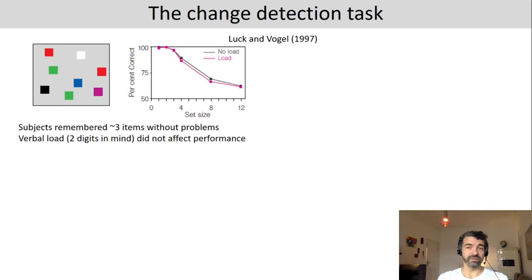As you probably noticed, the more items there are on the screen, the more difficult it is, because working memory has a limited capacity. You can only put that many items in a slot in working memory. If the item that happens to be probed did not fall into one of these slots, then you are at chance level — you can only guess. If the item that is probed was stored in working memory, however, you'll be able to tell if there was a change.